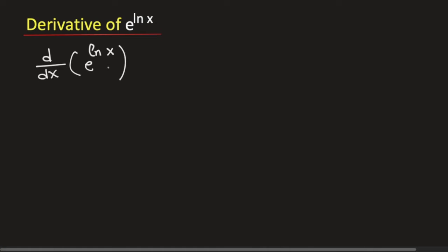So to find this derivative, at first we will simplify e power ln x. So let's assume that t is equal to e power ln x.